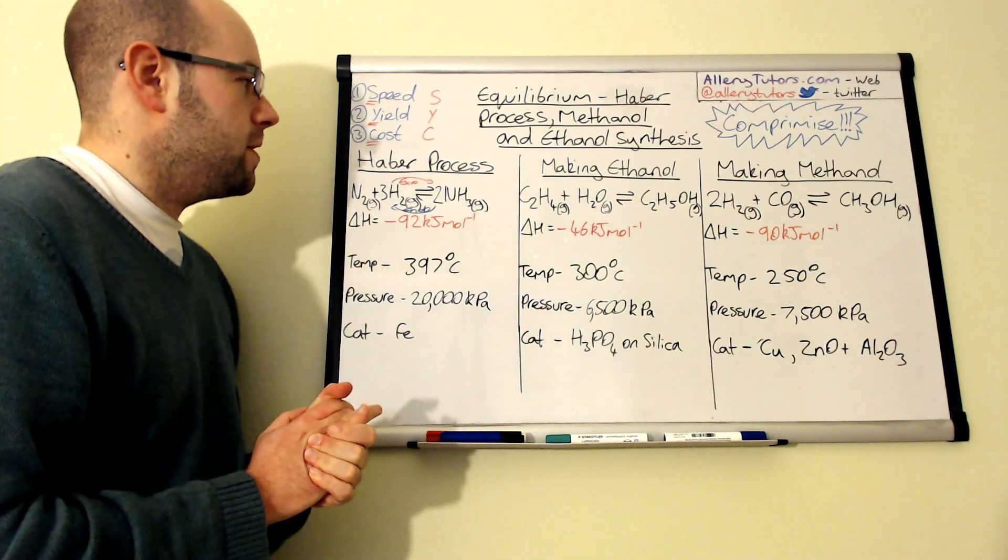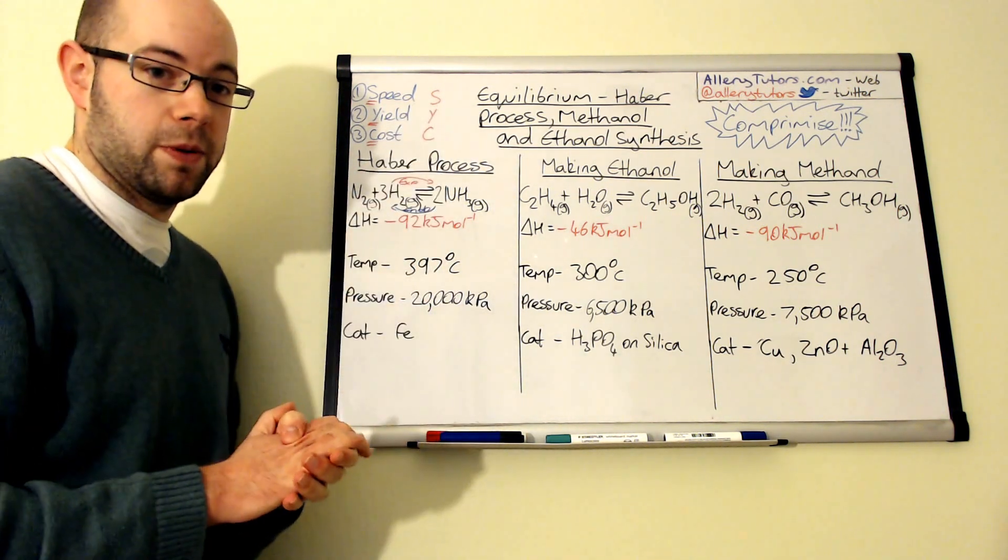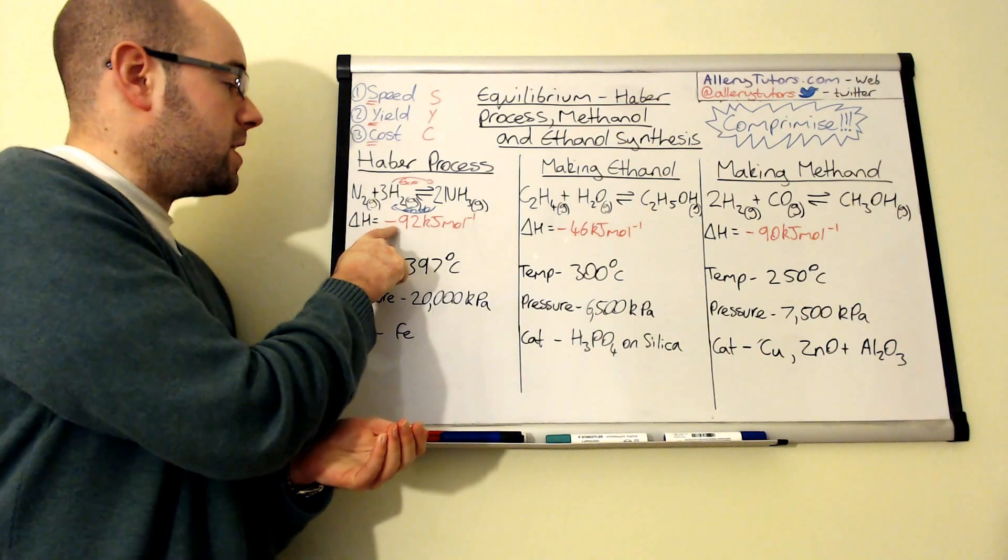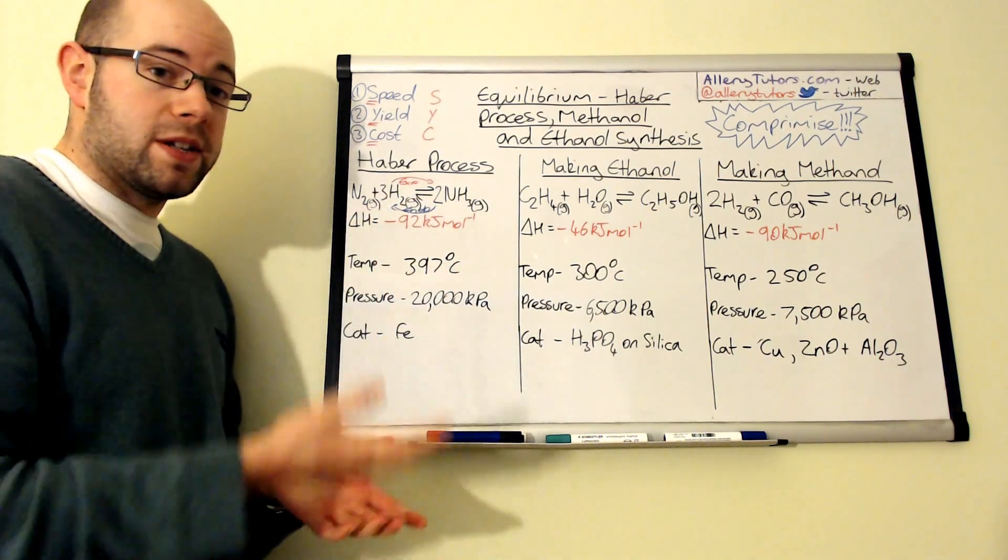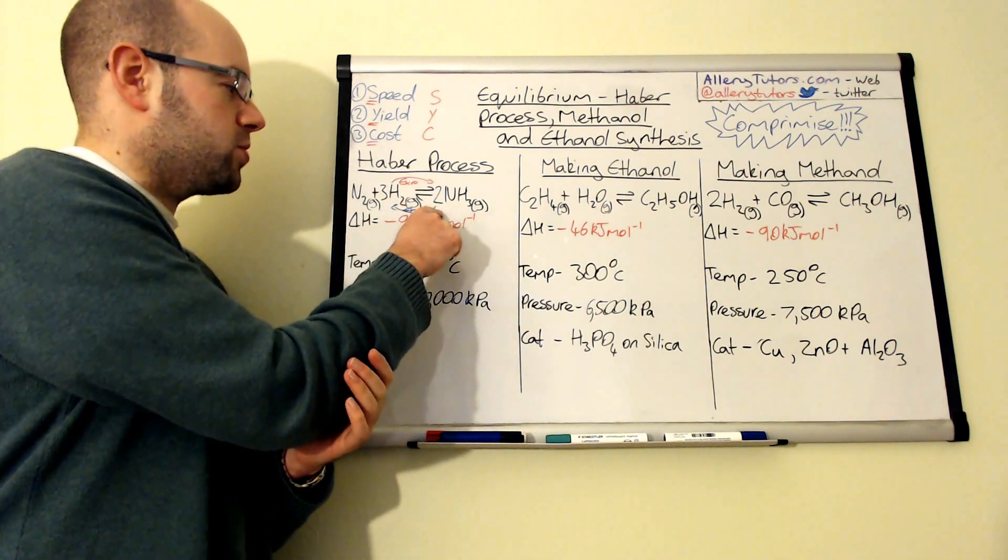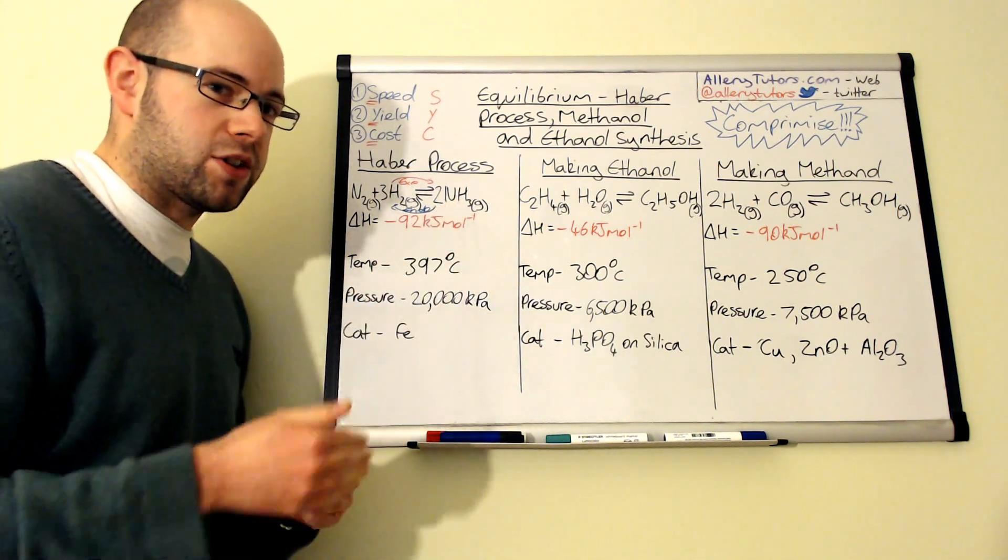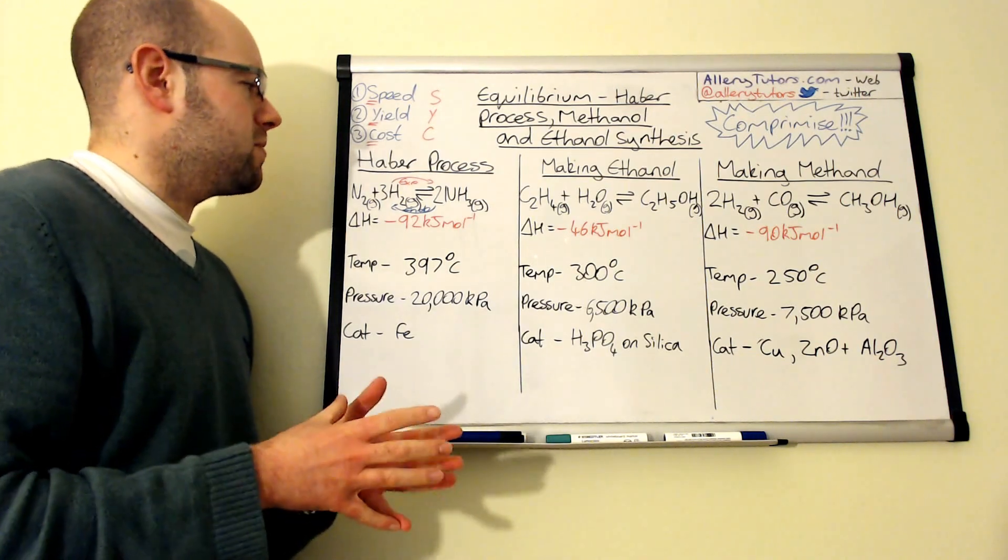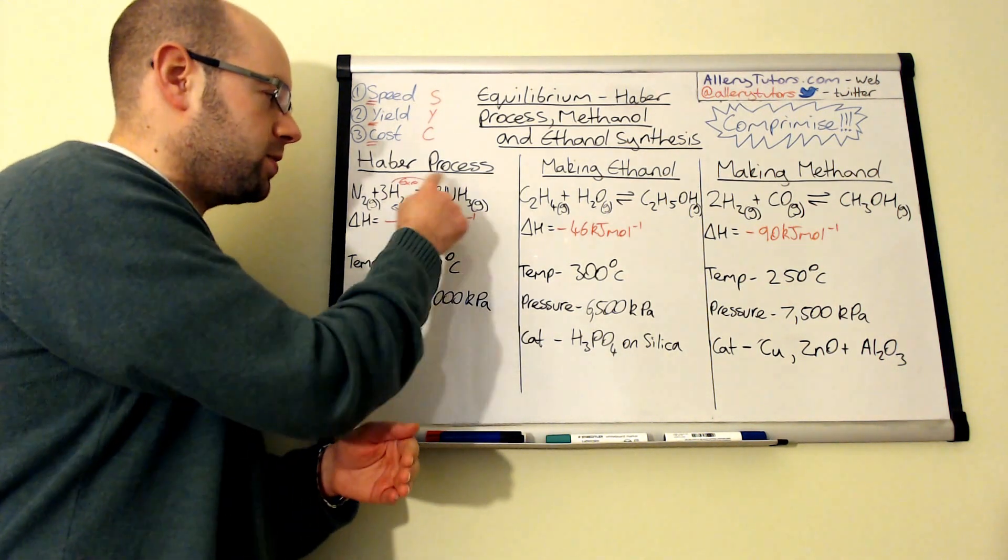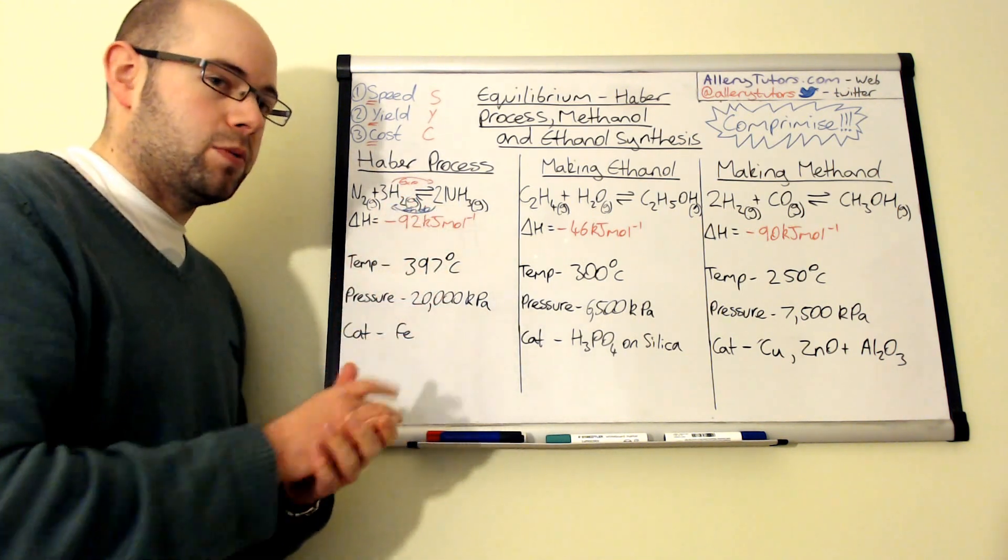In industry you're wanting to produce this thing as quickly as possible and the yield has to be quite large as well. So you can see here to increase the yield, if we increase the temperature of this reaction, then actually what will happen is the equilibrium will shift to the left, which means you produce less product. But increasing the temperature means that the reaction happens quickly, so effectively you've got a bit of a dilemma here.